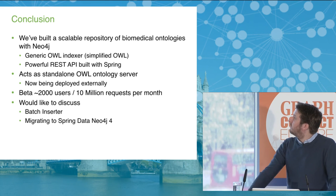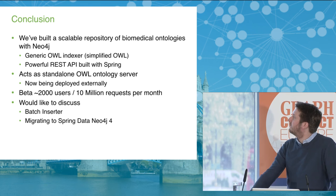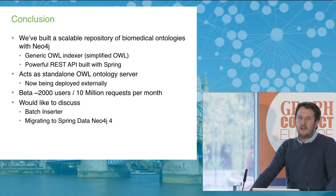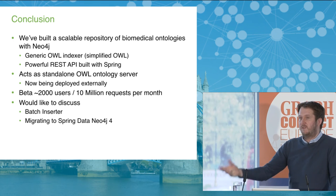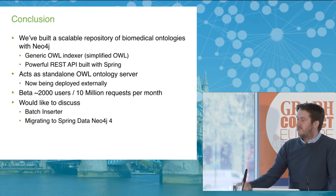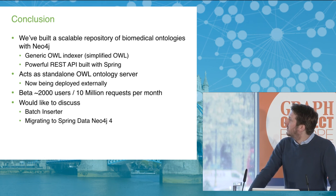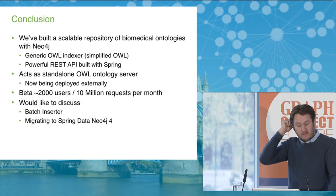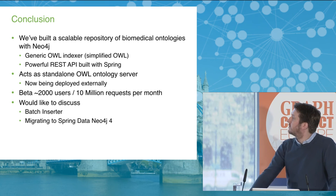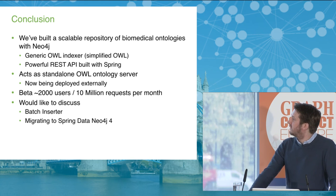To conclude, we've built this repository that we believe is very scalable. It provides unified access to all the ontologies - most of the important ontologies in biomedicine. The infrastructure is generic: if you're working with ontologies represented in OWL, you can take this code and build a Neo4j index over any OWL ontology. We're also starting to support SKOS, so other W3C representations we can handle. The integration of Neo4j with Spring is really nice - it's very few lines of code and we get this powerful REST API on top of the data. We've also started deploying this externally, and some pharma companies are now interested in taking this because it solves the ontology problem of having to deal with all these different ontologies.